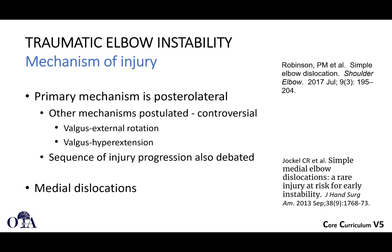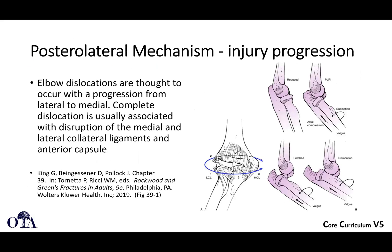When you get a traumatic dislocation leading to instability, the primary mechanism is posterolateral. There are other mechanisms, but most cases are considered posterolateral. Medial dislocations are another rare mechanism.